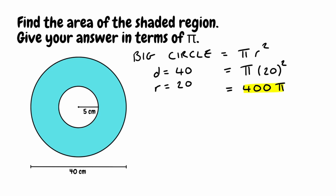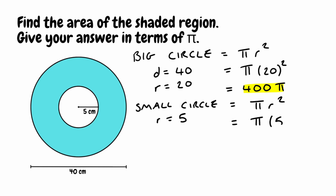Now we're going to look at the small circle. We want to figure out the area so we're going to use the formula pi r squared again. We've been given the radius this time — the radius is 5 centimetres for the small circle. So substituting in: pi multiplied by 5 squared. Well 5 squared gives us 25, so in terms of pi that simplifies to 25 pi. That gives us the area of the smaller circle.